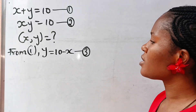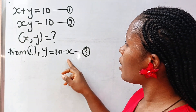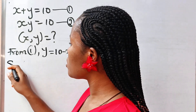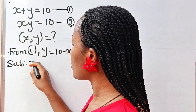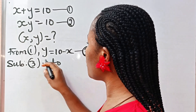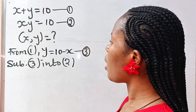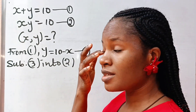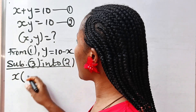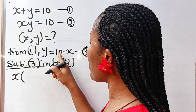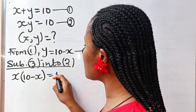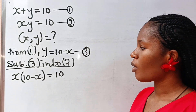Now let's substitute equation 3 into equation 2. So substituting 3 into 2, if we do that we will have x bracket — now our y is 10 minus x — so x(10 minus x) is equal to 10.